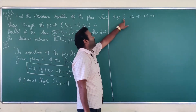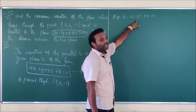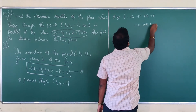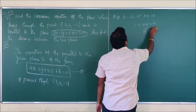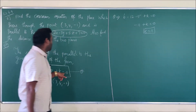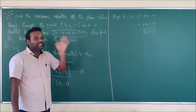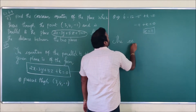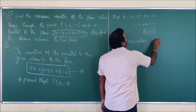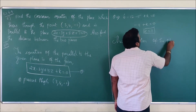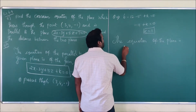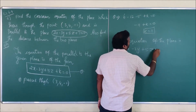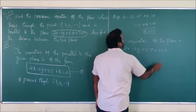Adding all the terms: 6 minus 5 is 1, and 1 minus 12 is -11. So minus 11 plus k equals 0, from which k equals 11. By substituting the value of k back into equation 1, the equation of the plane is 2x minus 3y plus 5z plus 11 equals 0.